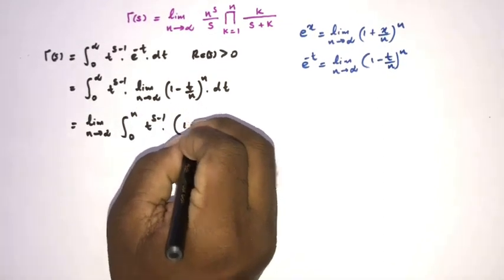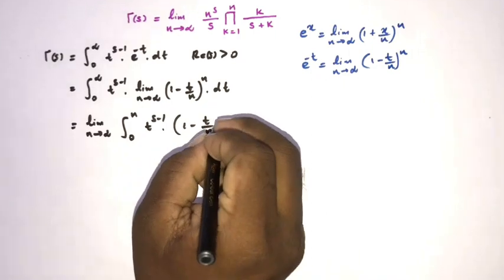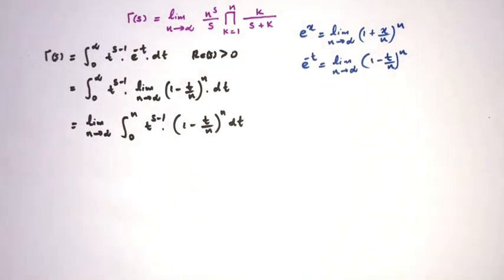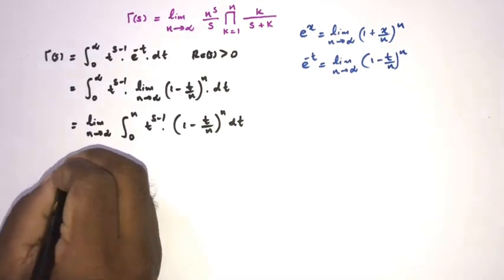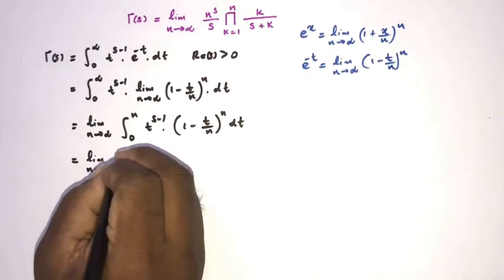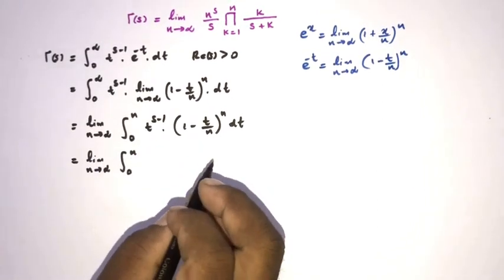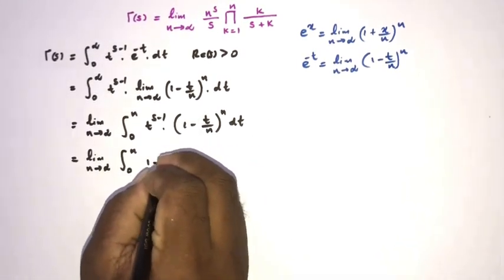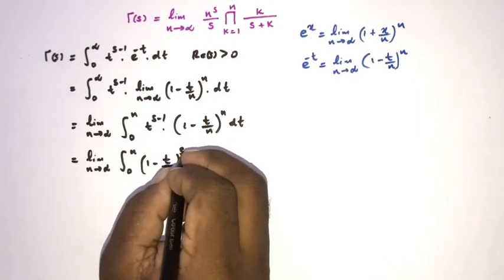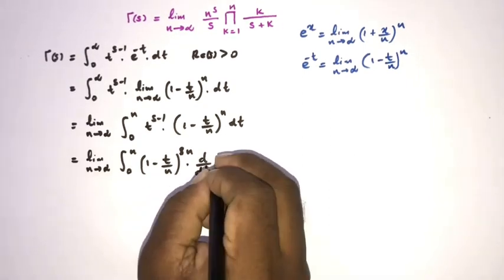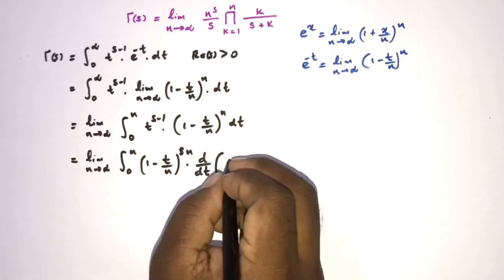So we have the limit as n approaches infinity of the integral from 0 to n of t^(s-1) times (1 - t/n)^n dt. To evaluate this integral, we can use integration by parts (IBP). As the first function I am going to take (1 - t/n)^n, and integrate t^(s-1) to get t^s over s.